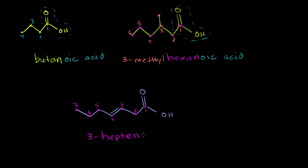But this isn't just a regular alkene. This is a carboxylic acid. So instead of writing that final E here for an alkene, we have a carboxyl group right here. So this is 3-heptenoic acid. And we are done.